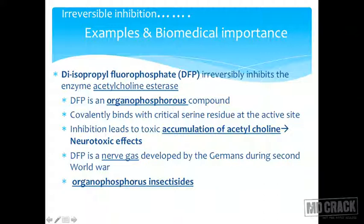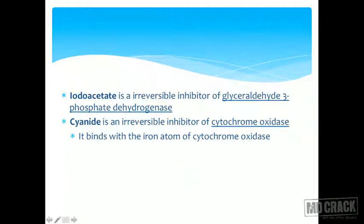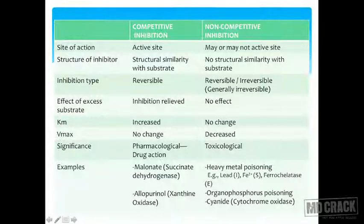DFP is a nerve gas developed by the Germans during the Second World War. Other examples include organophosphorus insecticides, which also cause irreversible inhibition. Another important irreversible inhibitor is iodoacetate, which inhibits glyceraldehyde-3-phosphate dehydrogenase. Cyanide is the irreversible inhibitor of cytochrome oxidase, binding with the iron atom of cytochrome oxidase.